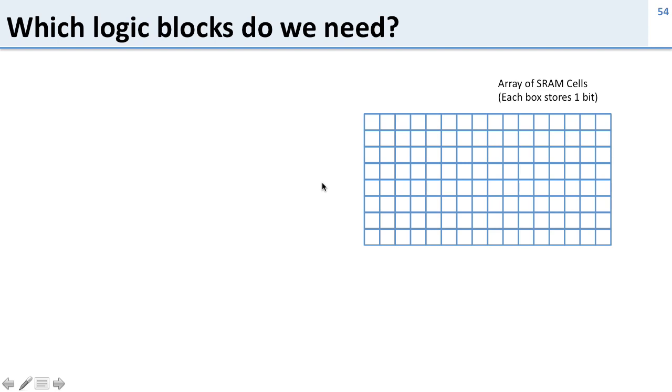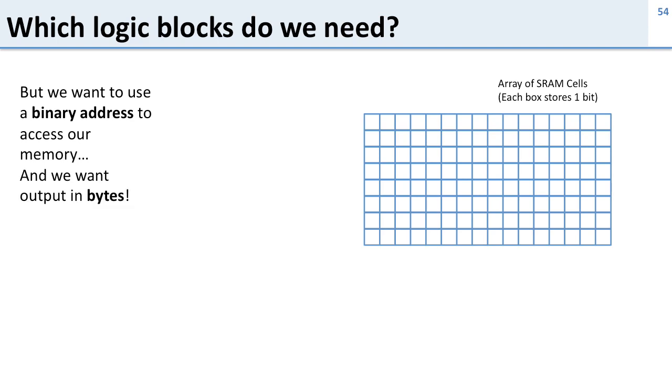Now let's go ahead and build a memory using the logic blocks we talked about before. So here's our array of SRAM cells and we have some things we need to deal with. We want to use a binary address to access our memory. We don't want to use one hot and we want our output in bytes and we saw in the previous slide that we get our output as 16 bits at a time here. So we're going to use the logic blocks we looked at before to figure out how to fix this.